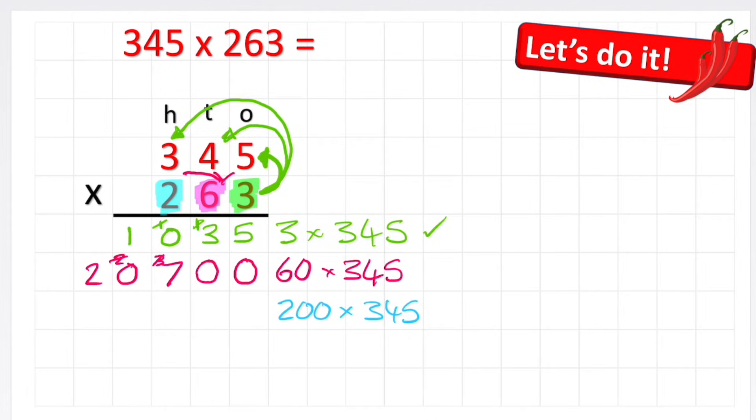Now I'm ready for my final row. How can we show that 200 is 100 times larger than the 2? Well, I can put 2 placeholders. And by putting 2 placeholders, I'm saying that everything I multiply this 2 by is actually now being multiplied by 200.